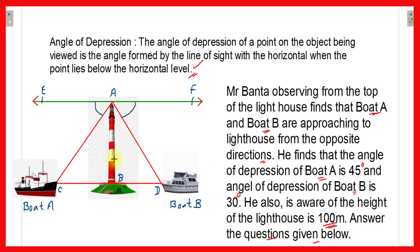From the top of the lighthouse, Mr. Banta observes two boats approaching towards the lighthouse from opposite directions — this is boat A and this is boat B. When he observes boat A, the angle of depression formed is 45 degrees. When he observes boat B, the angle of depression is 30 degrees. The height of the lighthouse is 100 meters and we have to answer the given questions.